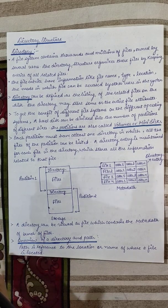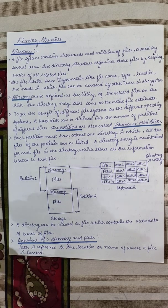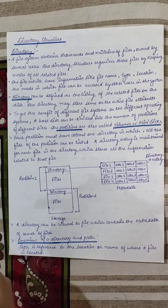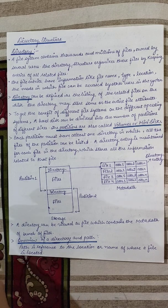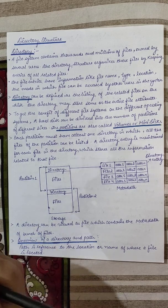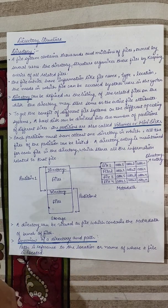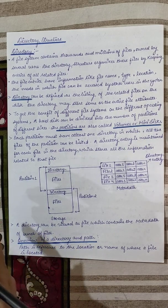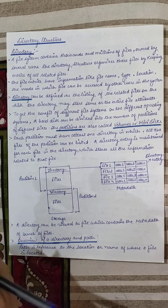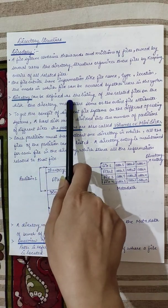Files are stored in our file system — all files will be stored in a directory. A directory can be defined as the listing of related files on the disk. The directory may store the entire file attributes or some file attributes, as written here.